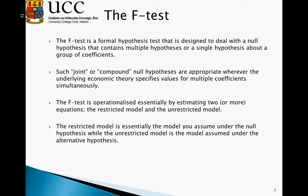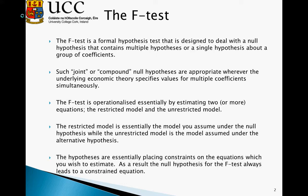For instance, in the Cobb-Douglas production function, the restricted model has the null hypothesis that alpha plus beta equals 1, or constant returns to scale. The alternative hypothesis is that alpha plus beta does not equal 1 and that the returns to scale are not constant. The hypotheses are essentially placing constraints on the equations which we want to estimate.